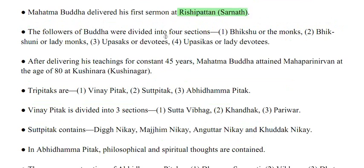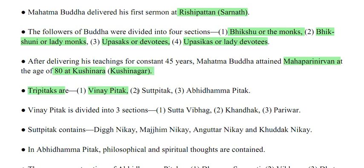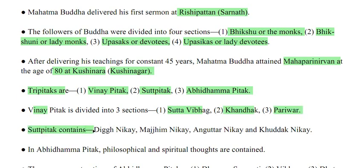The followers of Buddha were divided into four sections: Bhikshu (monks), Bhikshuni (lady monks), Upasaks (devotees), and Upasikas (lady devotees). After delivering teachings for 45 years, Mahatma Buddha attained Mahaparinirvana at the age of 80 at Kushinara. The three Pitakas are Vinay Pitaka, Sutthi Pitaka, and Abidham Pitaka. Vinay Pitaka is divided into Shuth Vibhaag, Khandak and Parivar. Sutthi Pitaka contains Dheeg Nikai, Majhim Nikai, Angutra Nikai and Kuddak Nikai. Abidham Pitaka contains philosophical and spiritual thoughts.